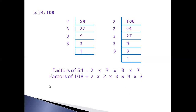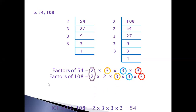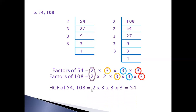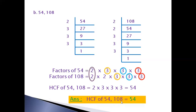Now we are going to select the common factors for both these numbers. First, the two is a common factor. Then three and three — both threes we have to select. Again one more three — here three is there, and here also three is there, so we select that. I have circled these in different colors. HCF of 54 and 108: take the 2, then three, then three, then one more three. Multiplying all: 2 threes are 6, 6 threes are 18, 18 threes are 54. So the answer — HCF of 54 and 108 is equal to 54.